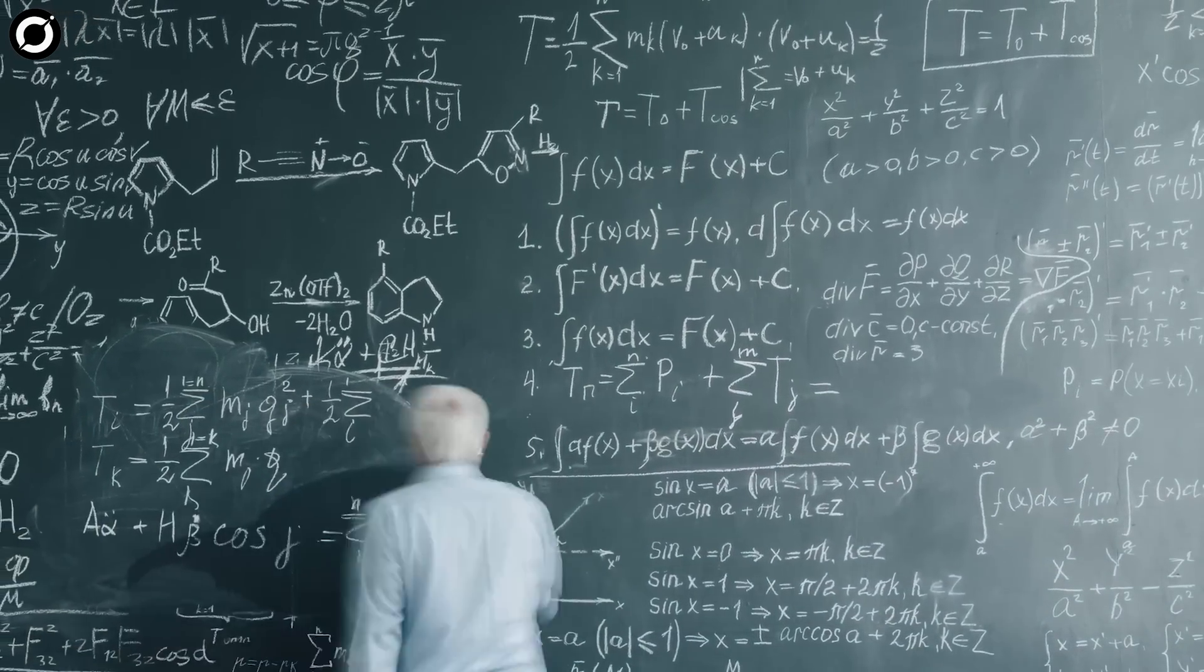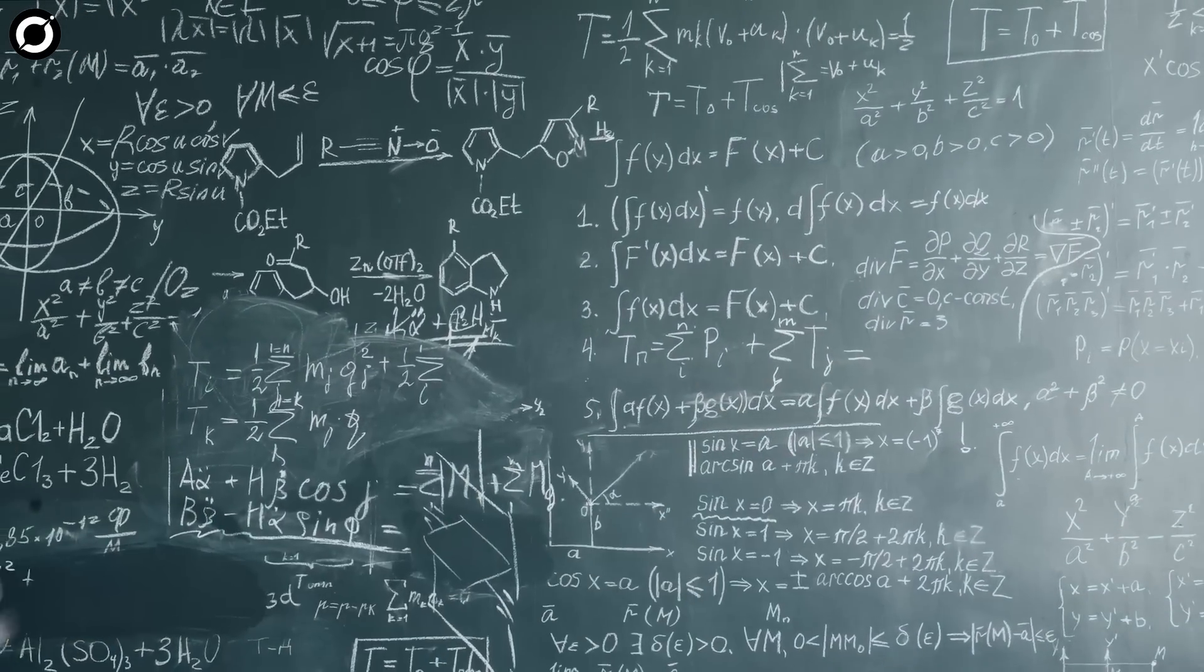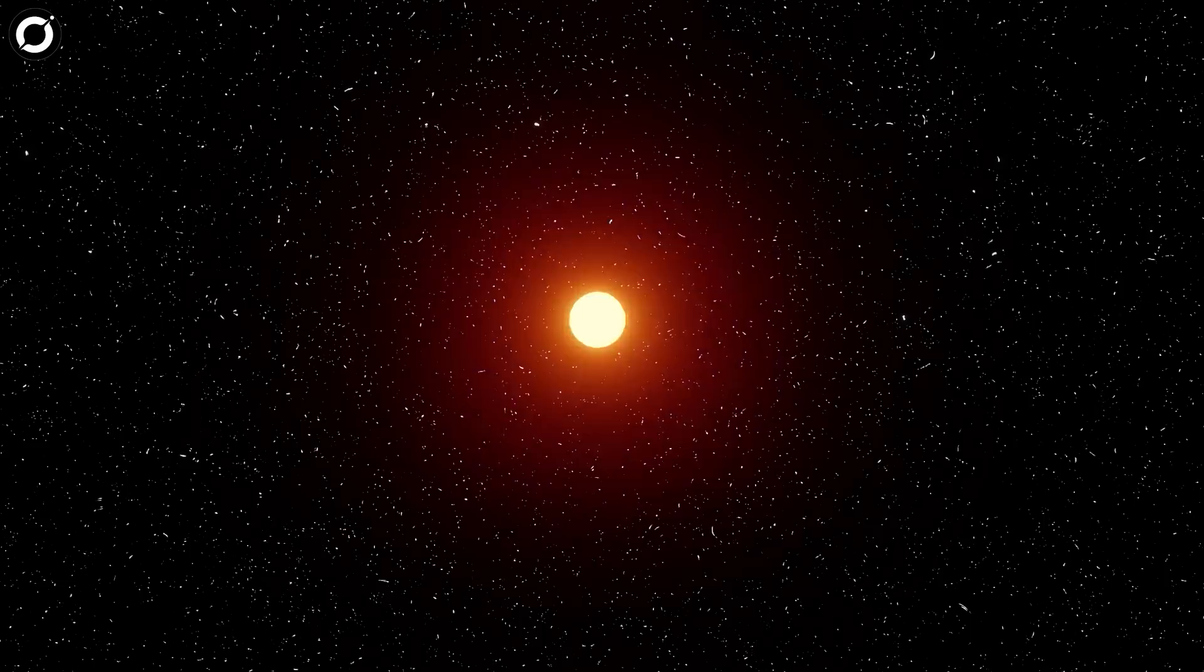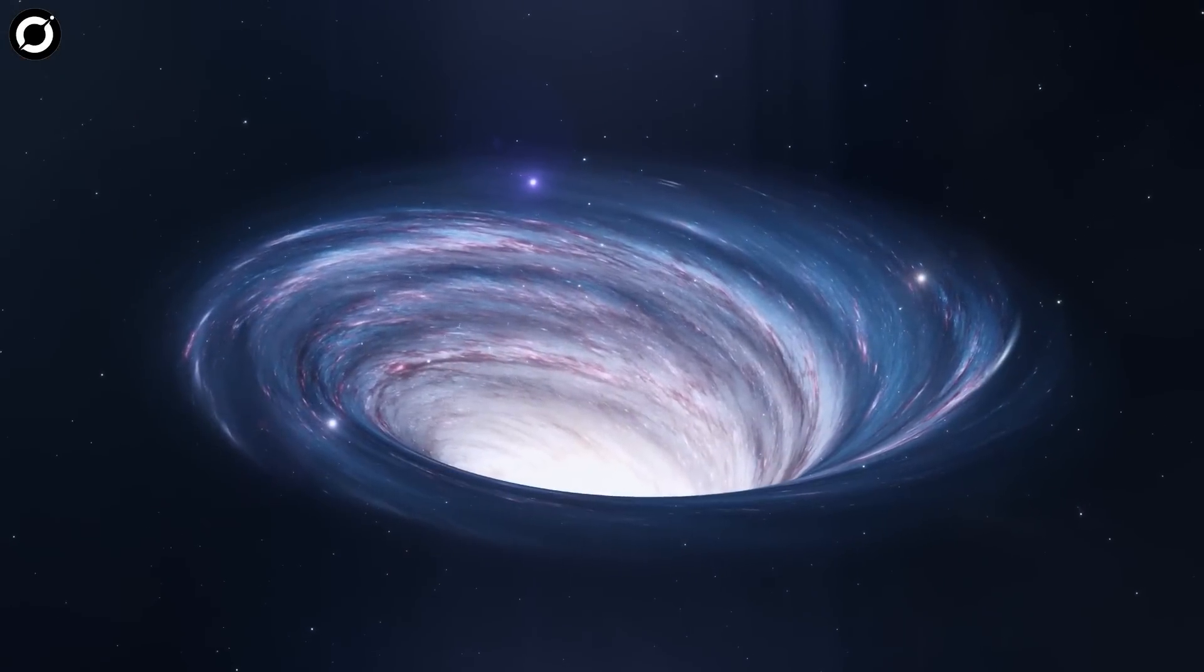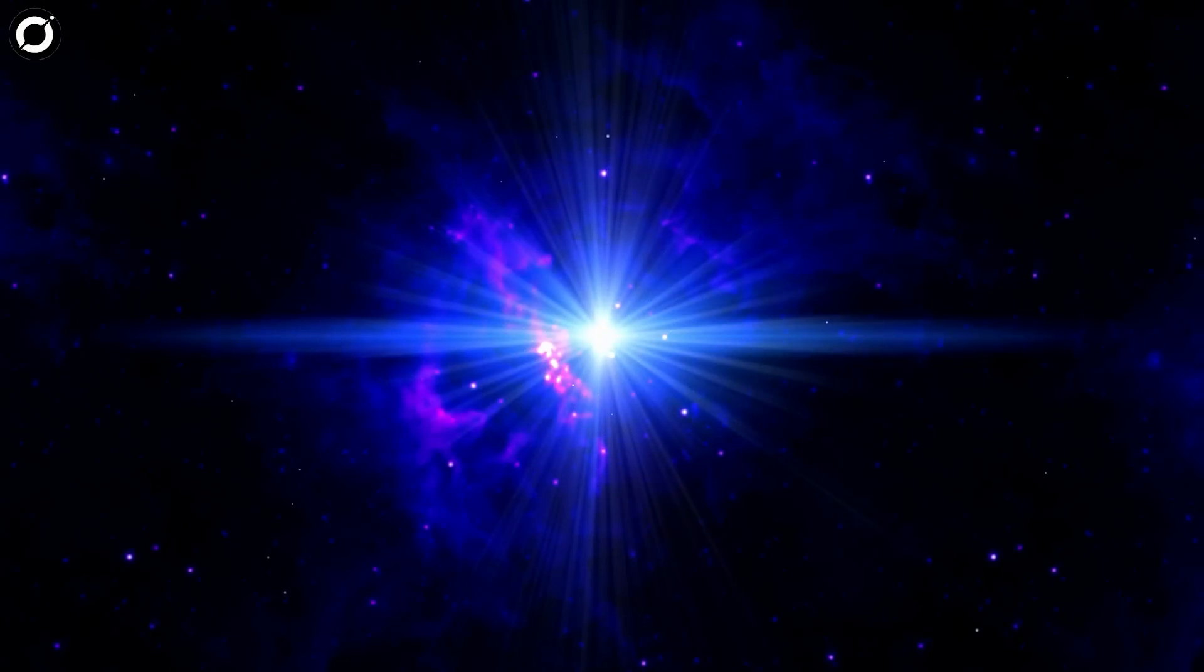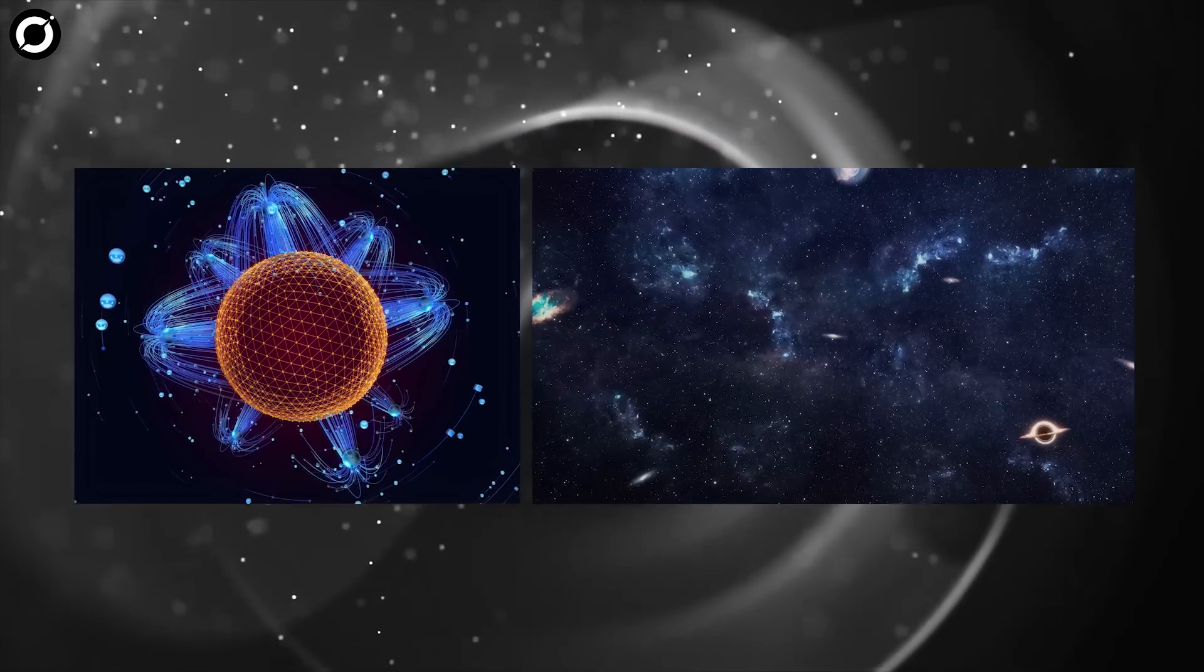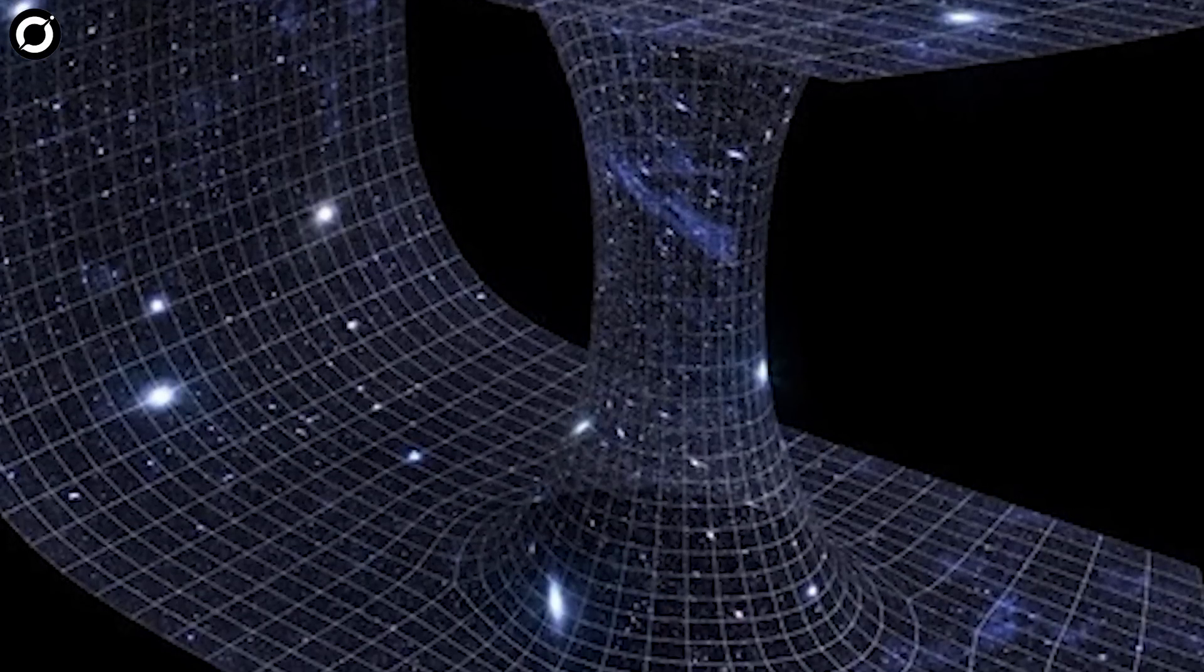But scientists continue to study and explore this concept, hoping that future technology will make it possible. However, there's an interesting theory proposed by theoretical physicist Nikodem Poplovsky. He suggests that a collapsed giant star in another universe could have created a wormhole to our universe. According to his calculations, conditions inside this wormhole might resemble those during the Big Bang, which could explain some mysteries about gravity and the expanding universe. And thus, we could very well be living inside a wormhole.